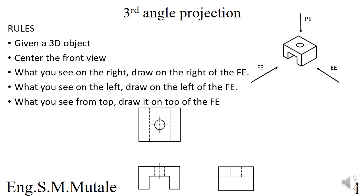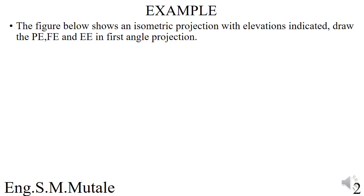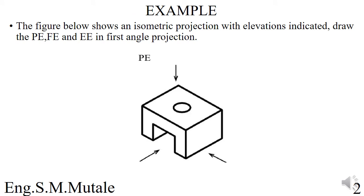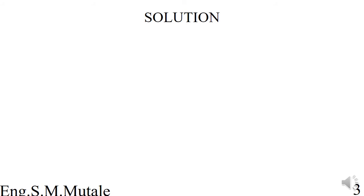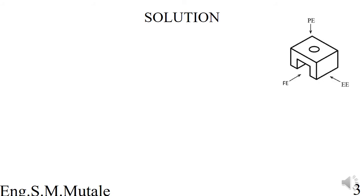Those are the basic rules you need to note in third angle. Once you know this, we can proceed with an example. The example says: the figure below shows an isometric projection with elevations indicated — draw the plan elevation, front elevation, and end elevation in third angle projection.